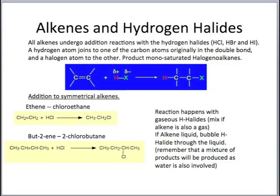Let's look at alkenes reacting with hydrogen halides. All alkenes undergo addition reactions with hydrogen halides, and hydrogen halides are hydrogen chloride, hydrogen bromide, and hydrogen iodide. Here is a generic picture of what happens when ethene reacts with a hydrogen halide. X is used to represent the halide.